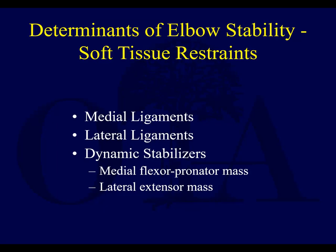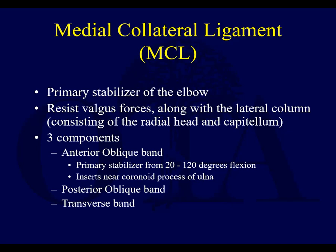There are some soft tissue restraints around the elbow: the medial ligaments, the lateral ligaments, and then the dynamic stabilizers — the medial flexor pronator mass and the lateral extensor mass. The MCL is the primary stabilizer of the elbow, along with some bony restraints, and it resists valgus forces. The main band is the anterior oblique band.